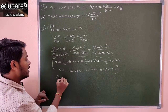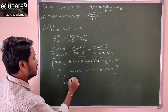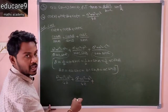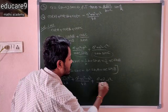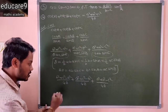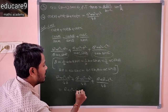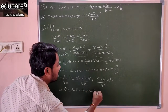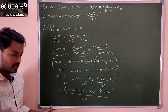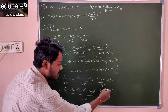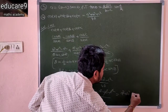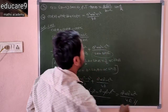So this becomes (b²+c²-a²)/4Δ plus (a²+c²-b²)/4Δ plus (a²+b²-c²)/4Δ. The denominators are equal, so add the numerators. The -a² and +a² cancel, -b² and +b² cancel, -c² and +c² cancel. What remains is a²+b²+c² divided by 4Δ. This is the required answer.